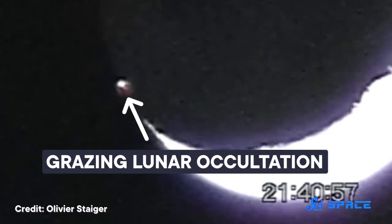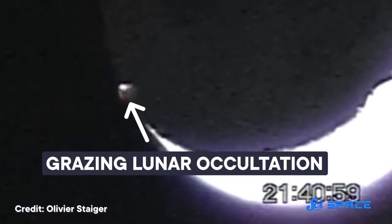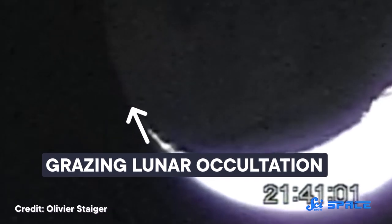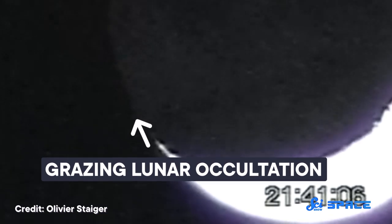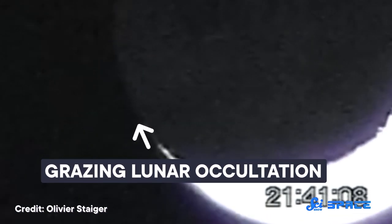If you watch one of these events from just the right spot, you can often see the star disappear and reappear, like a light flashing on and off. What's happening is that the star is disappearing every time it passes behind a mountain on the Moon and reappearing in the valleys.